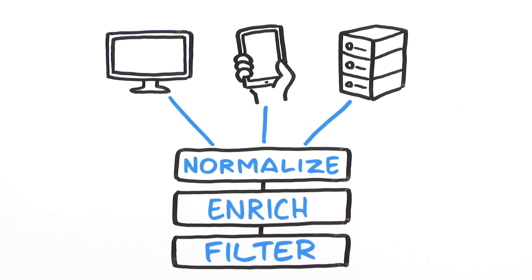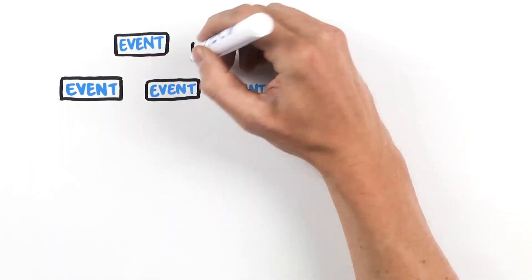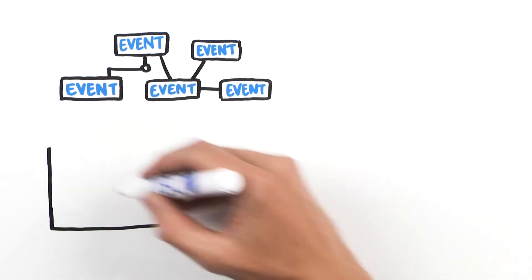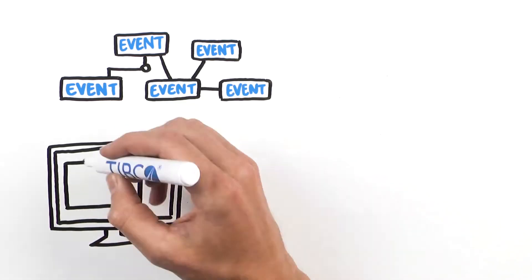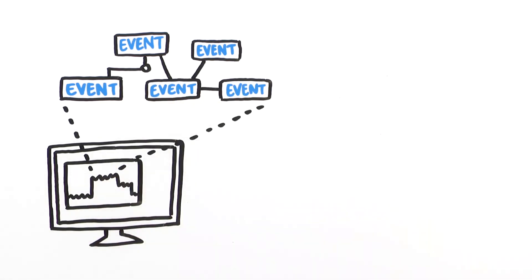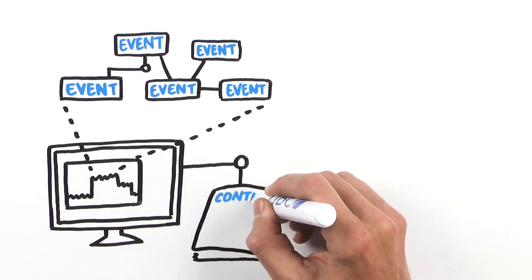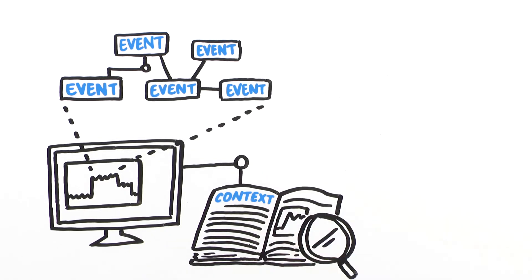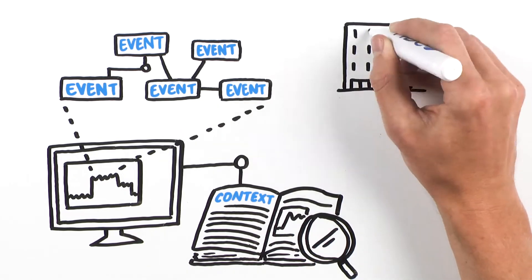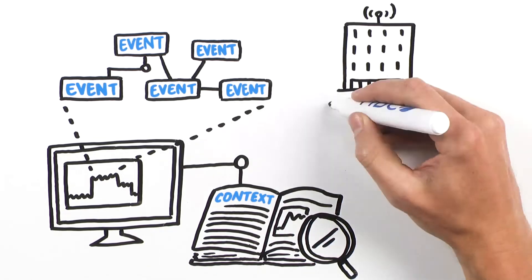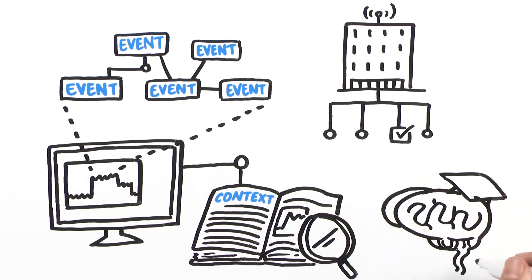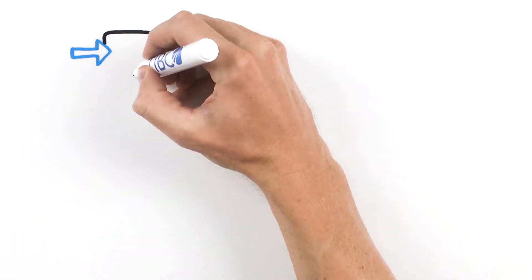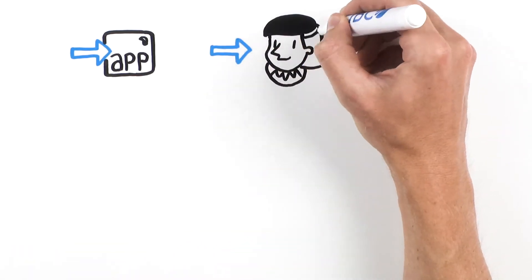You can then begin to correlate events, and over time you see patterns surface that describe events you care about. You add contextual data to ensure proper interpretation of events, and then you apply real-time business logic — business rules or machine learning — to trigger action. Action could be invoking an application or starting a process that involves staff.